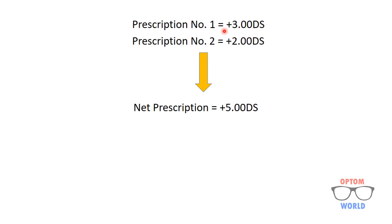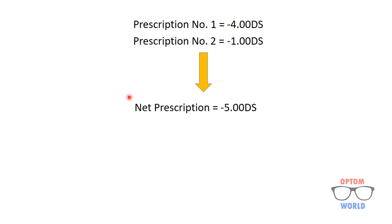The first example is spheres having the same sign. We have prescription number one as plus three and prescription number two as plus two. This is a simple case — we apply simple math: plus three plus two equals plus five, so the net prescription is plus five. The same applies for minus: if prescription one is minus four and prescription two is minus one, then the net prescription is minus five.